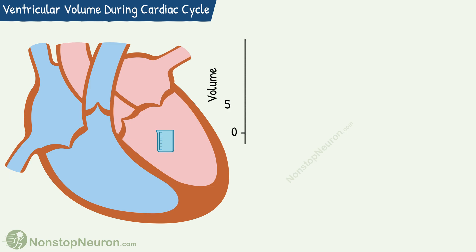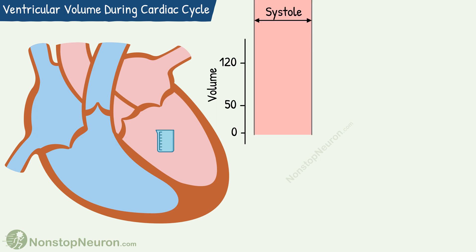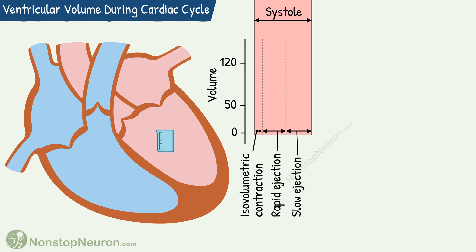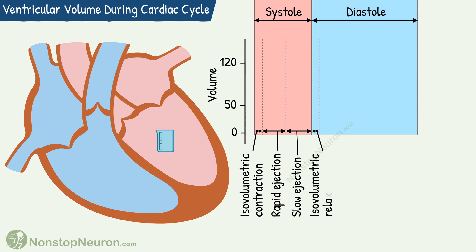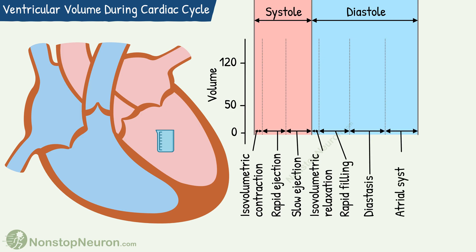This graph shows volume on the y-axis. As we have studied in the video on cardiac cycle, the ventricular systole includes isovolumetric contraction, rapid ejection, and slow ejection. And diastole includes isovolumetric relaxation, rapid filling, diastasis, and atrial systole.